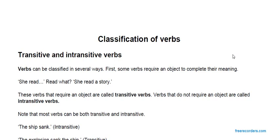Transitive and Intransitive Verbs. Verbs can be classified in several ways. Some verbs require an object to complete their meaning. For example, 'She read' — read what? It's incomplete. To complete the sentence: 'She read a story.' These verbs that require an object are called Transitive Verbs.